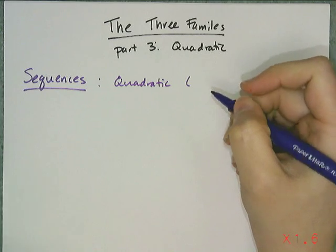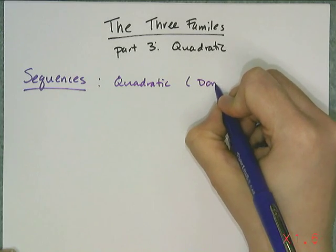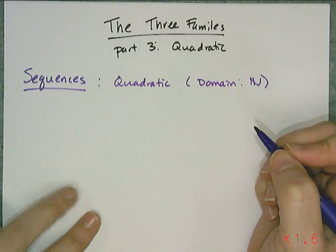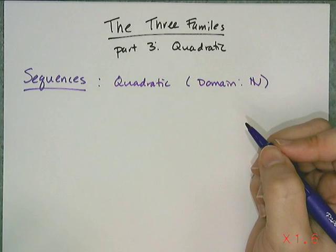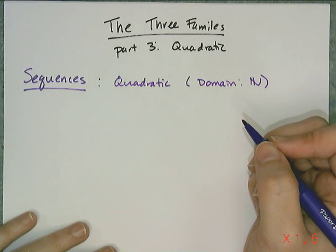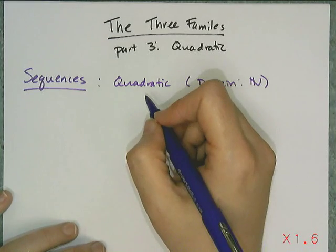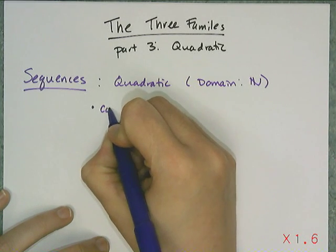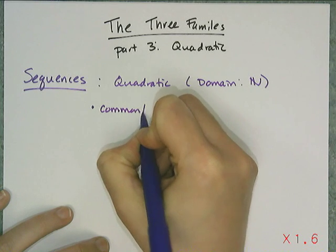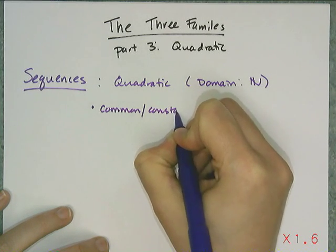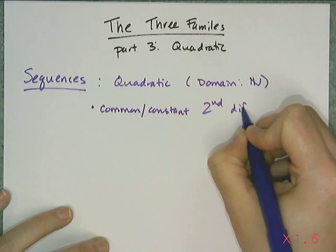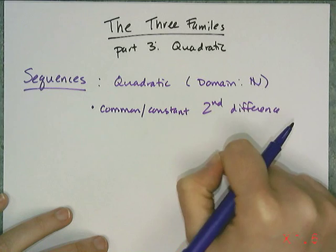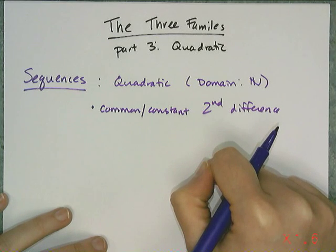Just like the other sequences, these guys have domains that are just the set of natural numbers, meaning 1, 2, 3, 4, not even a 0, just the natural numbers. And instead of having a common difference or a common ratio, these were special in that they had a common or constant second difference. So it wasn't the first set of differences between the terms that was the same, it was the second set of differences that was always the same.